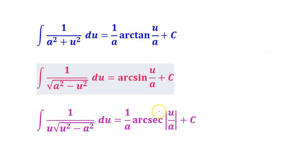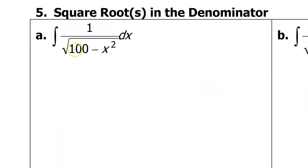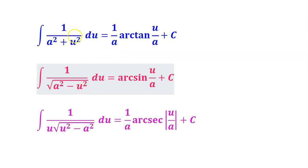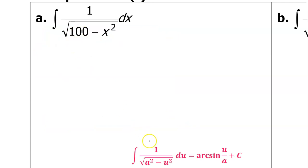These are the three inverse trig rules that you need to memorize. Which one will we use for this problem? We have the square root, and we have the constant minus the variable. Arctangent is out because it doesn't have the square root. It looks like arcsine is the one to use, because that's the one where we have the constant minus the variable. This is a perfect match for the rule, where the a value is equal to 10. We know this because the a value will be the square root of the constant.